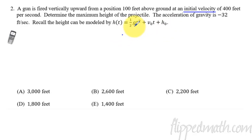Negative 32 is the gravity, so it's going to end up as negative 16t squared. My pen's having a problem here. Initial velocity is 400 feet per second, and then my initial height was 100.